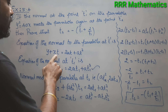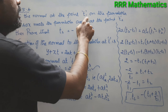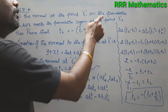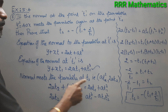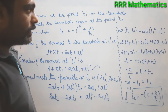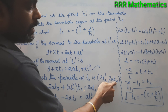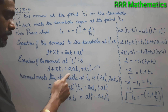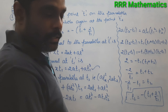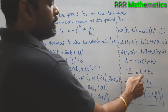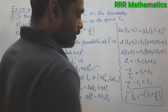To recap: the equation of the normal to the parabola at t is y + xt = 2at + at³. The normal at t1 meets the parabola again at t2, so we replace t by t1 in the normal, and substitute the parametric point (at2², 2at2). After simplification, we get t1 + t2 = -2/t1, and therefore t2 = -(t1 + 2/t1). Hence proved.